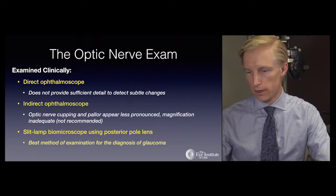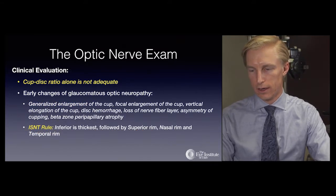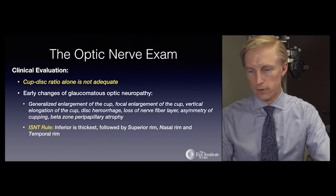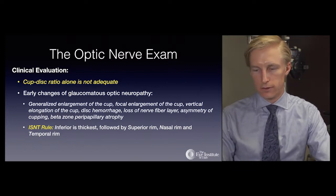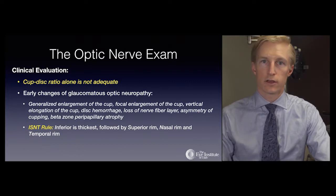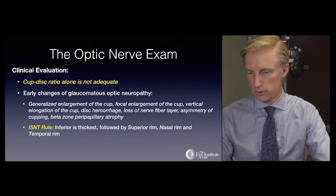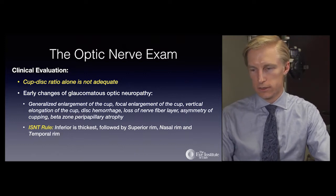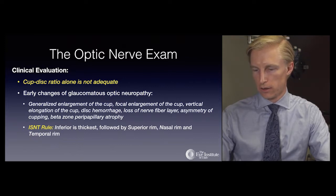The cup-to-disc ratio alone is not adequate when assessing the optic nerve. Early changes indicating glaucomatous optic neuropathy include generalized or focal enlargement of the cup, vertical elongation of the cup, presence of a disc hemorrhage, nerve fiber layer loss, asymmetry of cupping, and beta zone peripapillary atrophy. A general rule is the ISN'T rule: the inferior rim is typically thickest, followed by the superior rim, then the nasal rim, with the temporal rim being the thinnest.